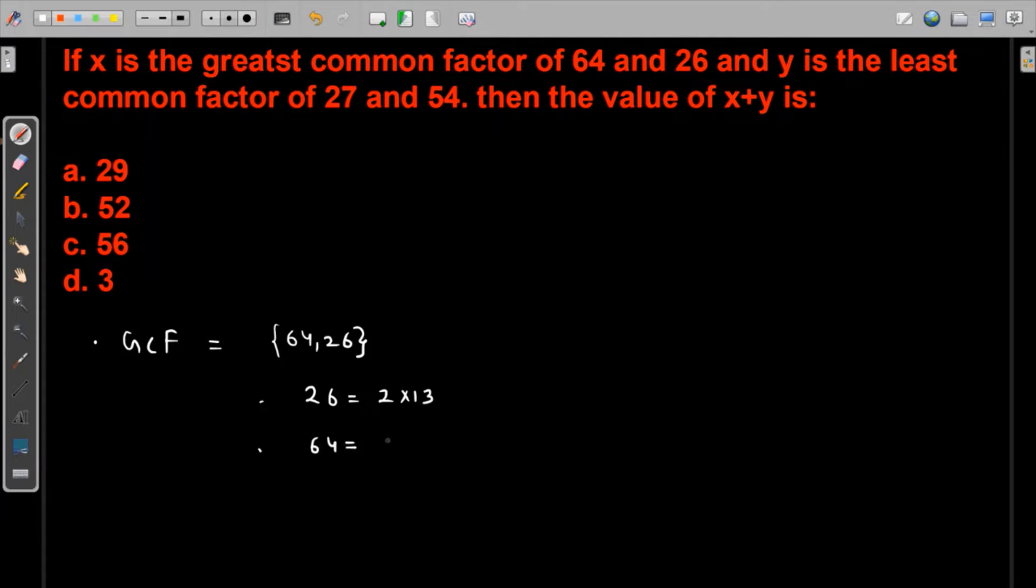It doesn't make any sense to break out 32 any further because we know that 32 does not have 13 as a common factor. So 13 anyway would not come common. The only common thing is 2 over here. So we'll say that the GCF or the greatest common factor is 2.